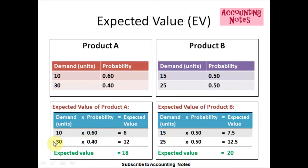We do the same for week 2. The demand is 30 units, so 30 times the probability of 0.40 equals 12 expected value. The total expected value for Product A is 18, which is 12 plus 6 equals 18.